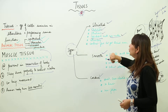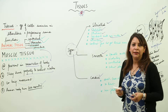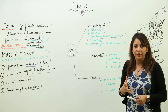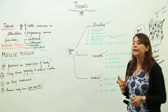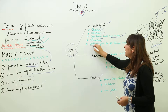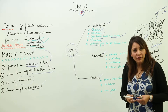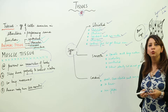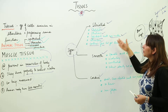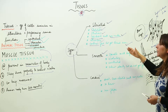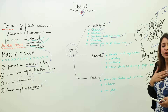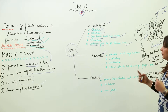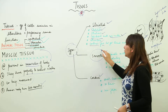Striated muscles are cylindrical with multiple nuclei. They are voluntary in action, meaning they are present in organs which work according to our will. They have the property of contracting very fast, but they soon get tired. So striated muscles are present in organs which work according to our will — for example, the arms and legs.